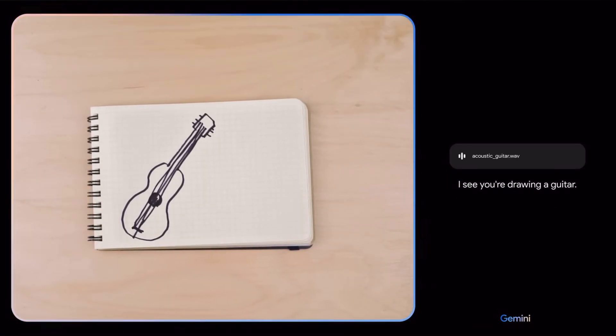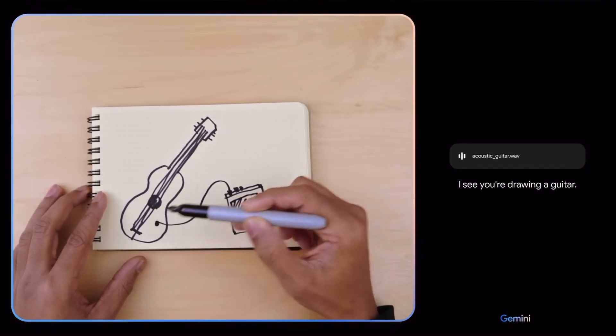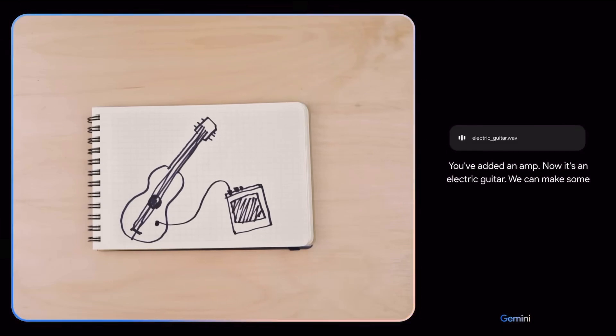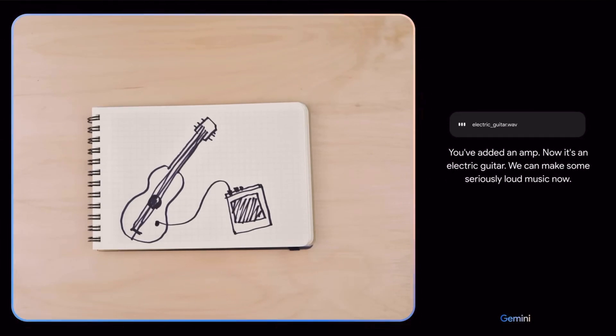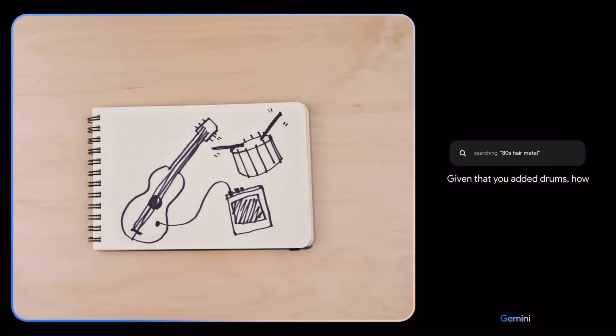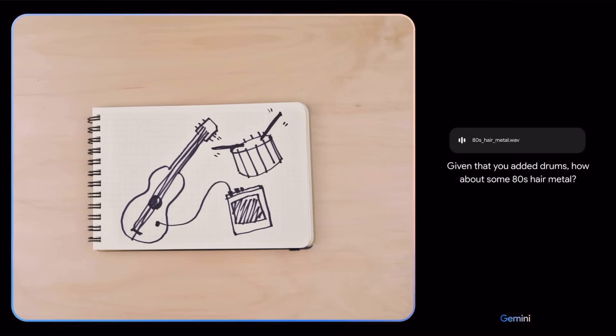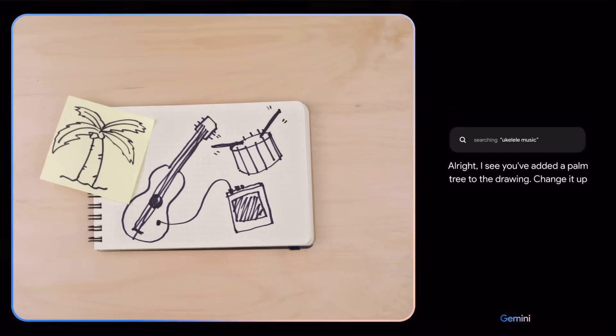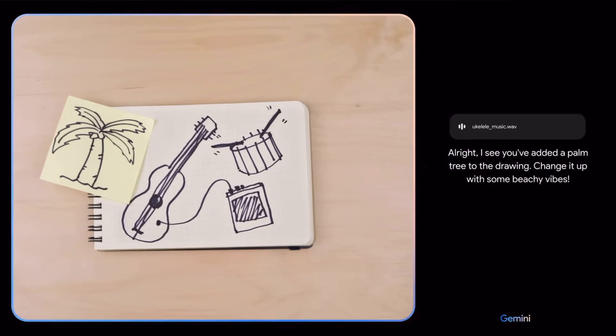I see you're drawing a guitar. You've added an amp. Now it's an electric guitar. We can make some seriously loud music now. Given that you added drums, how about some 80s hair metal? I see you've added a palm tree to the drawing. Change it up with some beachy vibes.